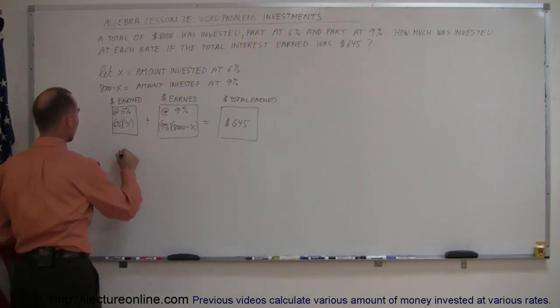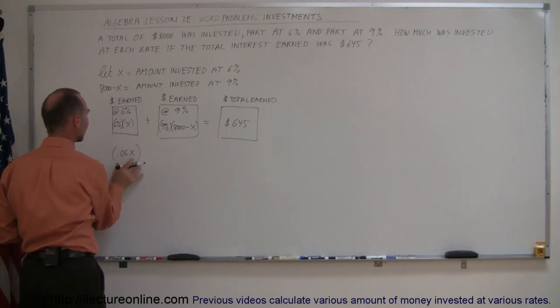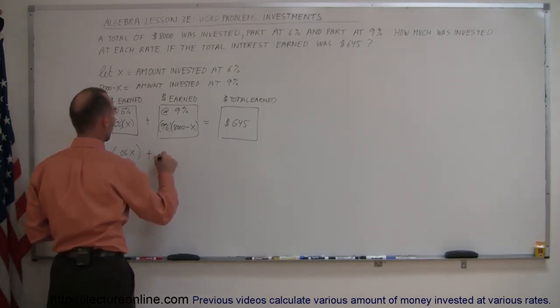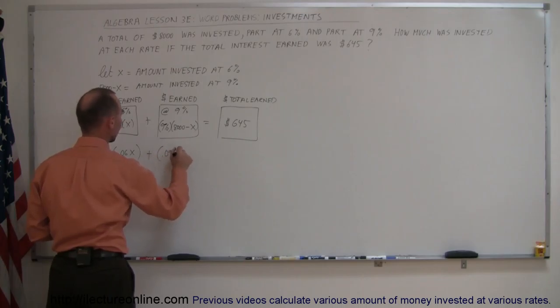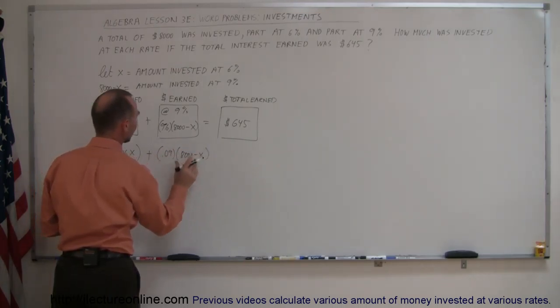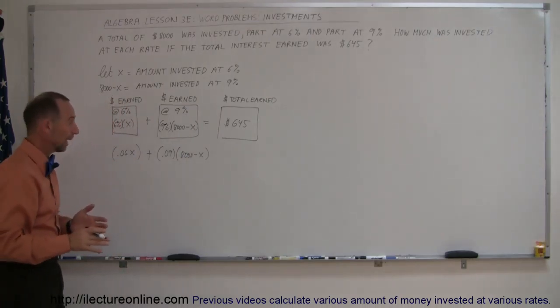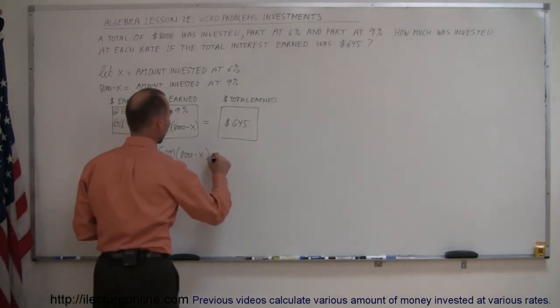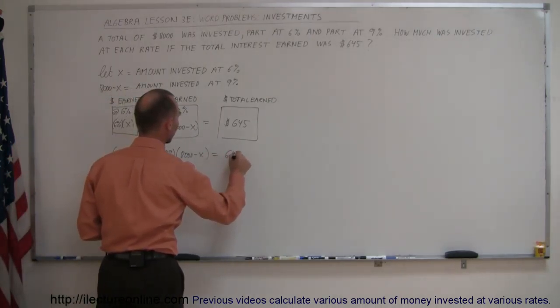Turning that into the equation, we get 0.06X. This represents the amount earned at 6%, plus 0.09 times 8,000 minus X. This represents the amount earned at 9%, and that adds up to the total amount of money earned.